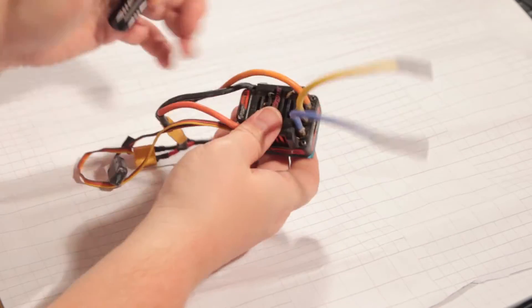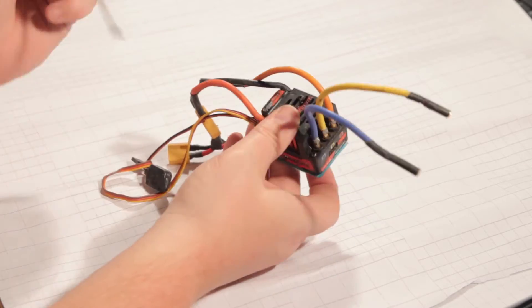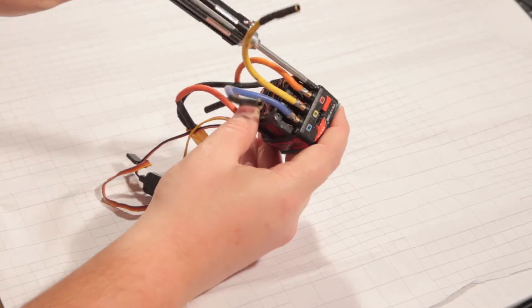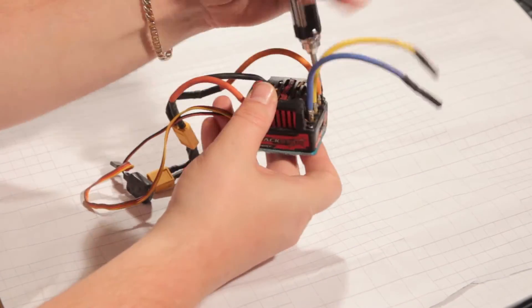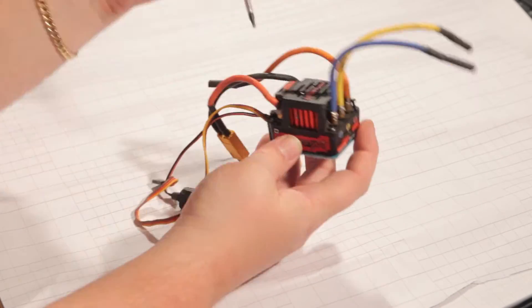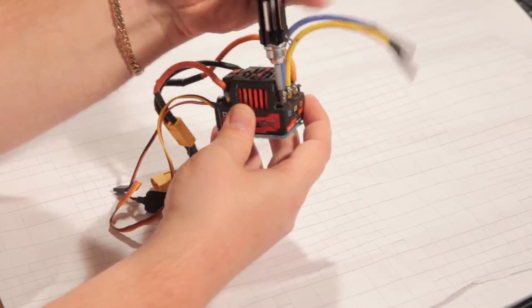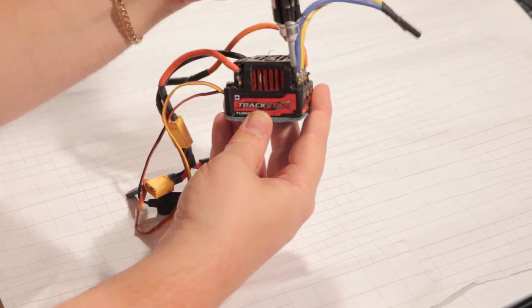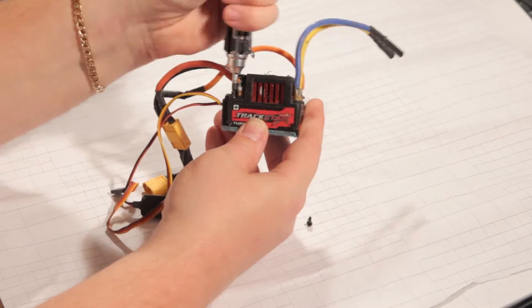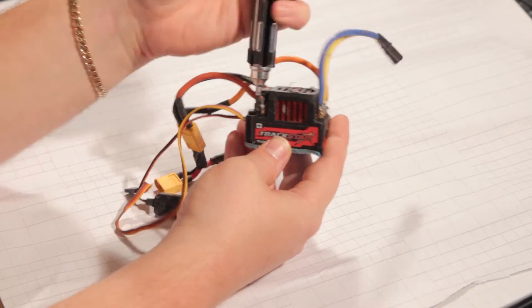All right, start taking it apart. This Trackstar's pretty simple, it's just four screws on top, and then the casing comes apart. I was kind of hoping, this is a used ESC, I was kind of hoping it was going to be a straightforward quick clean and a quick spray, but it didn't quite turn out to be that in this case, which is normally what happens.